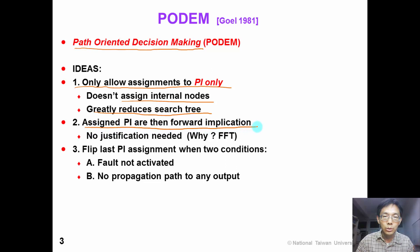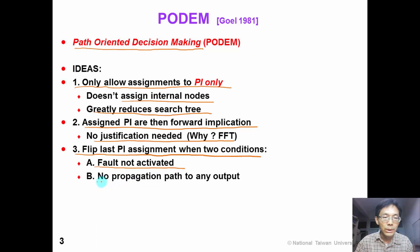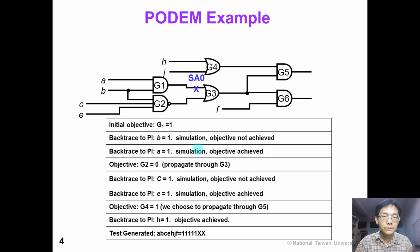Second, after assignment of primary input, we perform forward implication. So there is no justification needed. What is the reason? Please think about it. We have a question in FFT number 3. Third, we flip the last PI assignment when there are two failure conditions. Condition A: the target fault is not activated. Condition B: there is no propagation path to any output.